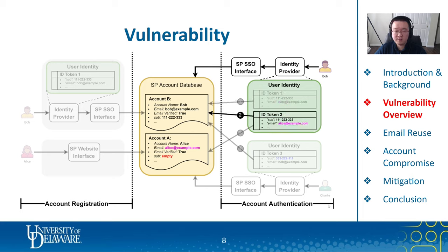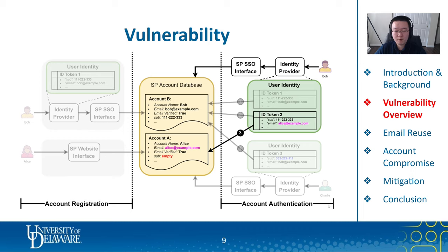But what if Bob decides that he wants to change his email address to alice@example.com? In this case, Bob would use ID token 2 for authentication. Because the service provider does not know about this change, there could be two completely different cases. In case 2, the service provider sees that the sub field of token 2 matches the same value in account B, and therefore grants Bob access to account B. Although this case is not ideal, it is still valid because Bob is the owner of account B. In case 3, the service provider realizes that the email address in token 2 is the same as in account A, and therefore might allow Bob to access account A simply because the email address is the same. This is dangerous because now Bob compromises Alice's account.